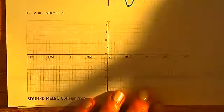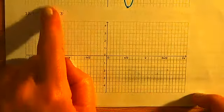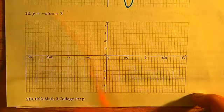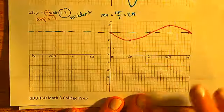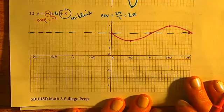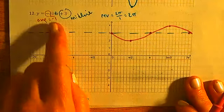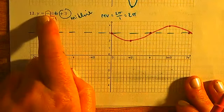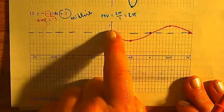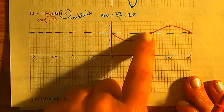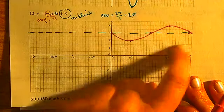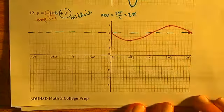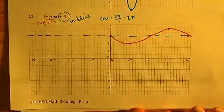The last answer is back to sine. Because the sine had a negative in front of it, the amplitude dips below first and then up instead of up and then down.